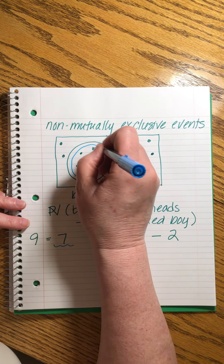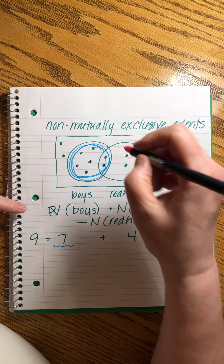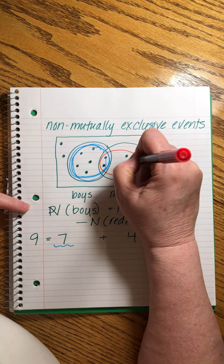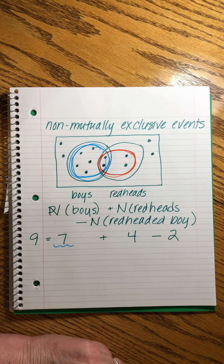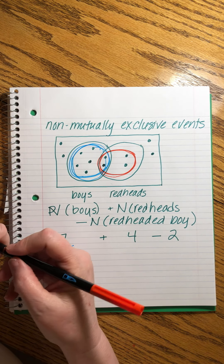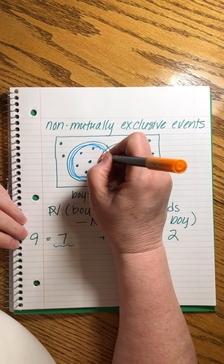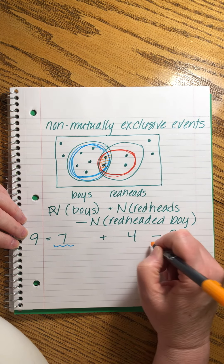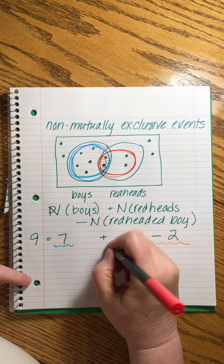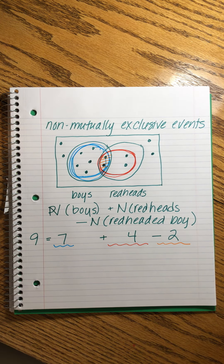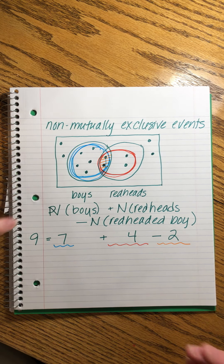I want to identify these here on the diagram: here are the boys — that's the whole circle. Here are the redheads — that's all of these. And then this little group here in the middle — these are the ones that we had to subtract out. These are the reds. That's how we have to deal with numbers when we're finding probabilities of things where there's some overlap between the two groups.